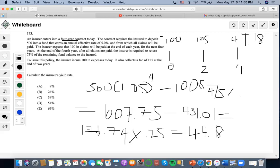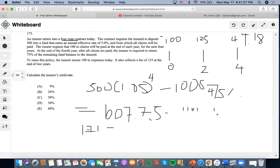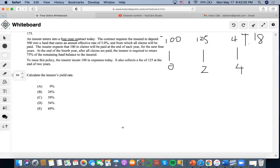Now we want to find the insurer's yield rate. So I'm going to erase this and set up an equation. We know that we have to pay out 100 in expenses. But we also want to use time four as our comparison. So we start with 100 in expenses, we accumulate it to four years.